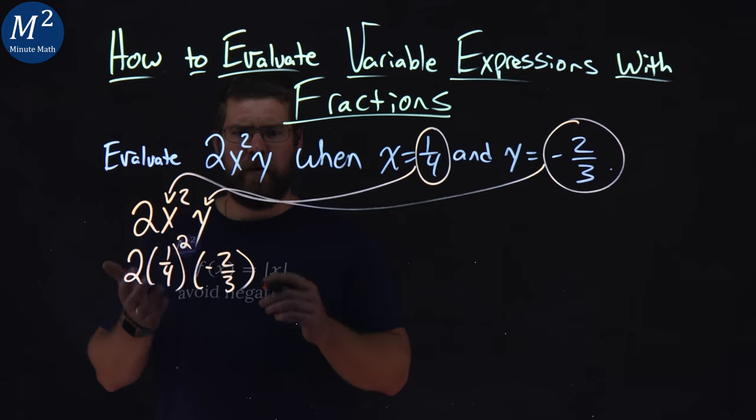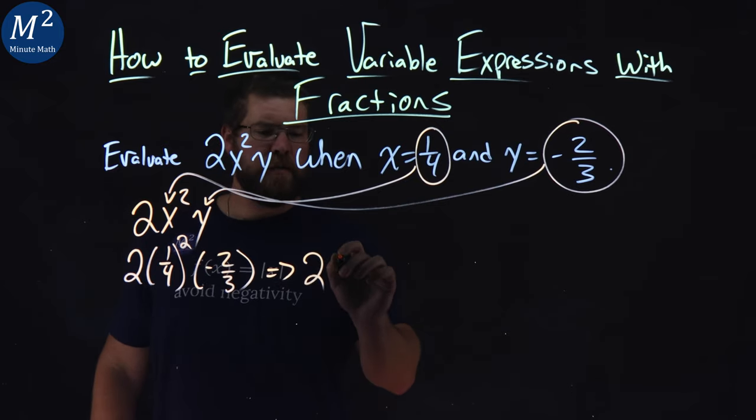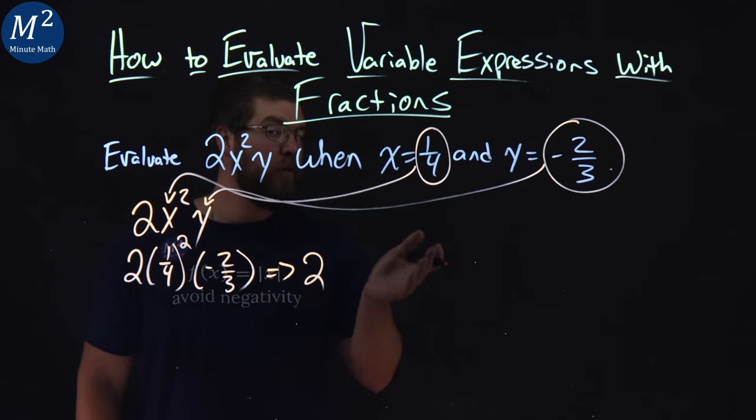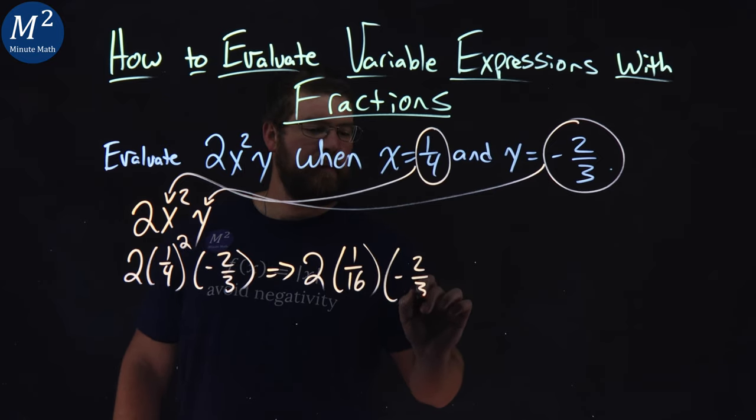Well, simplify where we can here. We have 2 times 1/4 squared is 1/4 times 1/4, which is 1/16, times negative 2/3.